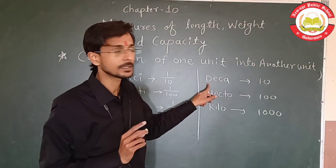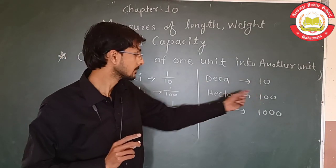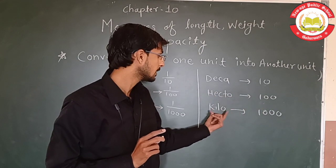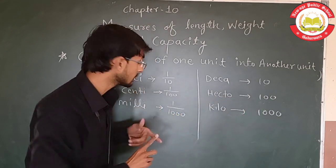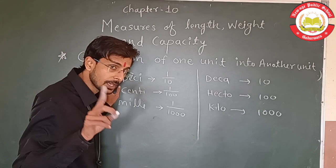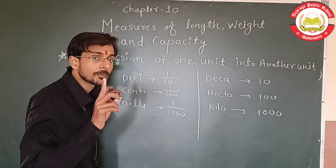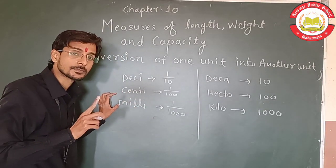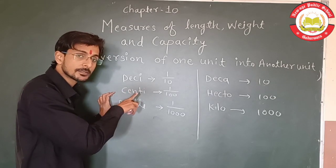When we talk about lower units: deci means 1 upon 10, centi means 1 upon 100, and milli means 1 upon 1000. So these are the lower units.